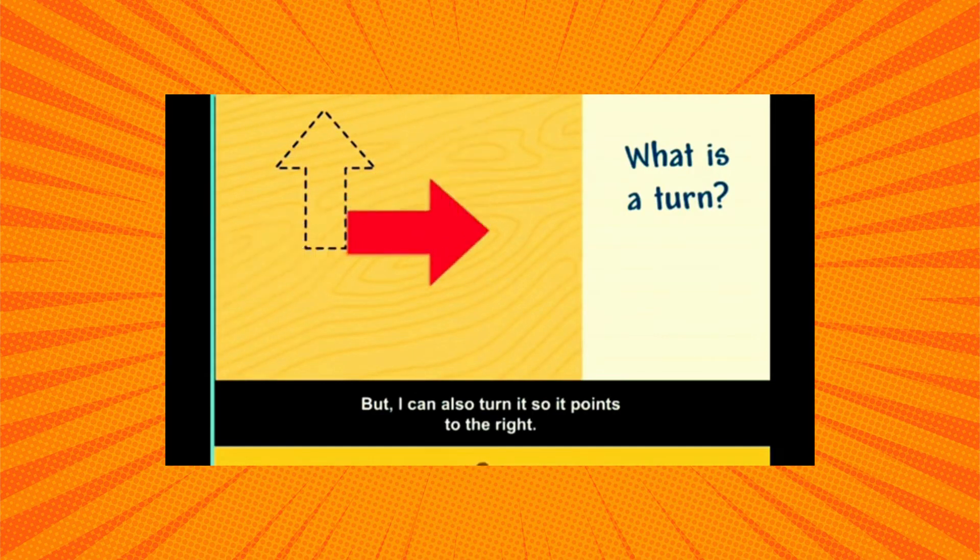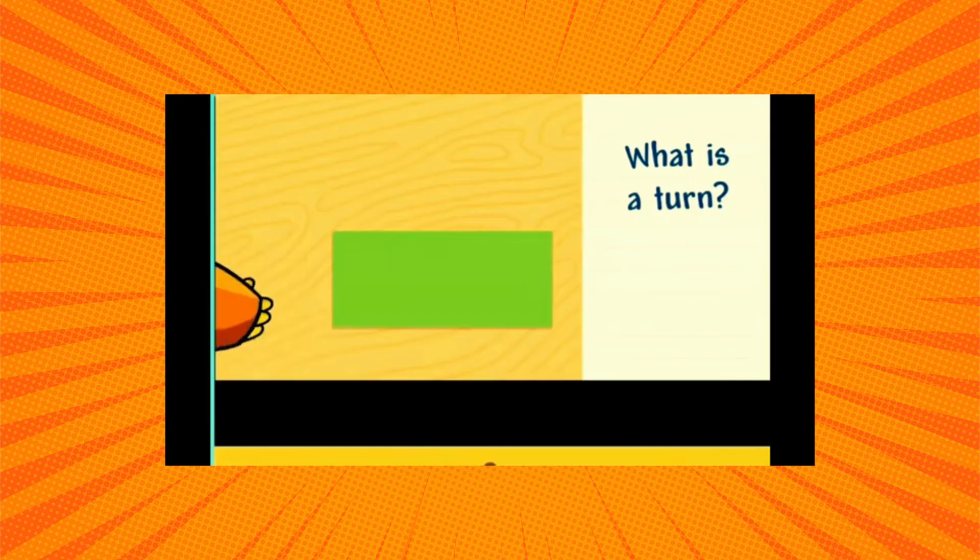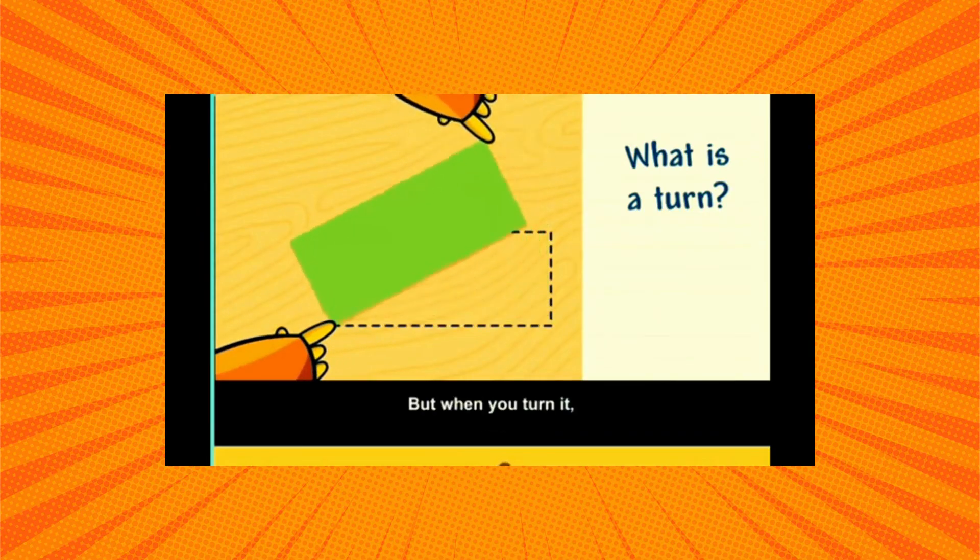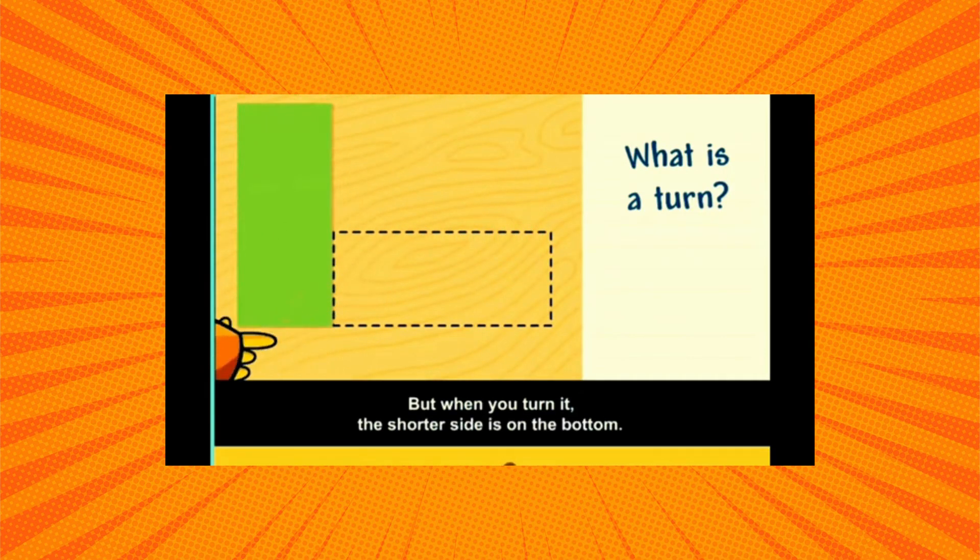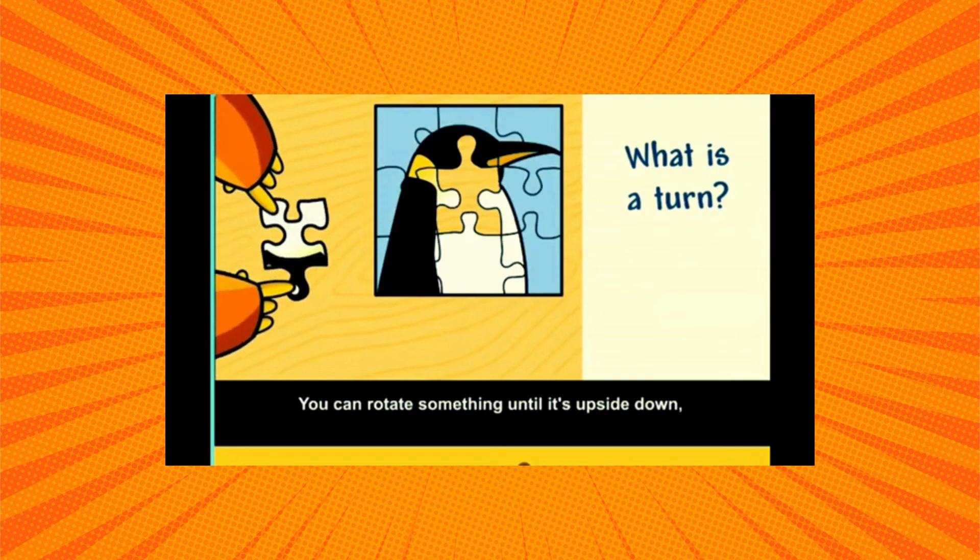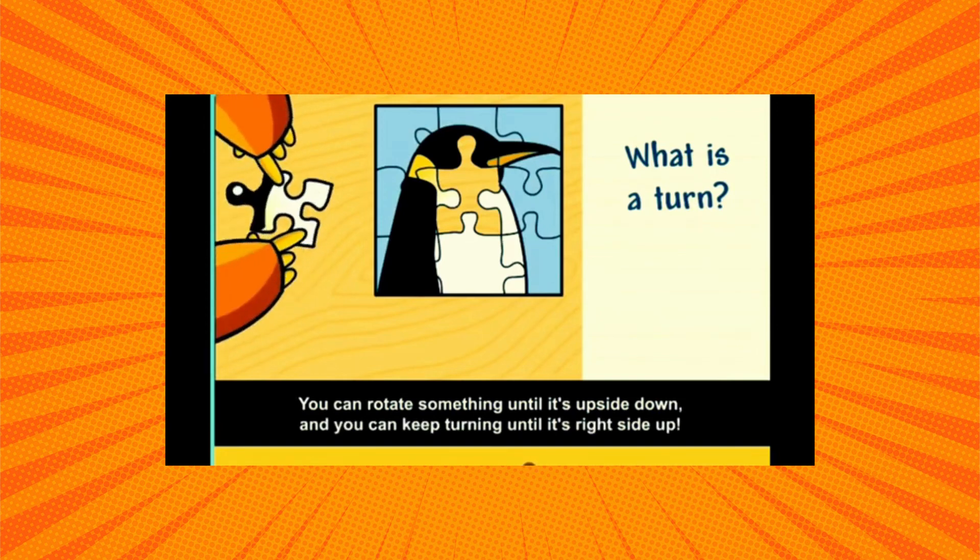One of the longer sides of the rectangle is on the bottom, but when you turn it, the shorter side is on the bottom. You can rotate something until it's upside down, and you can keep turning until it's right side up.